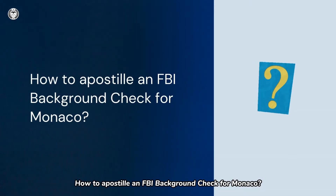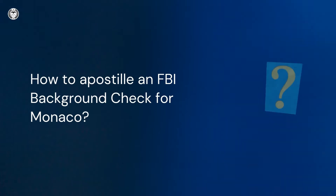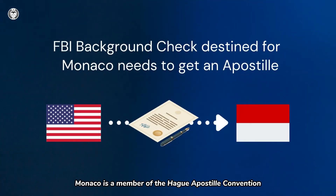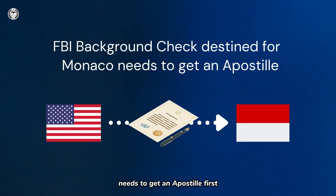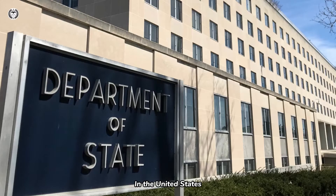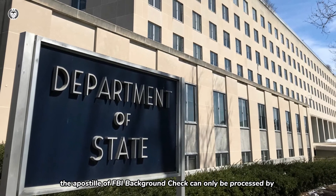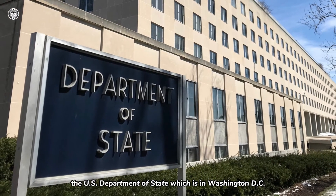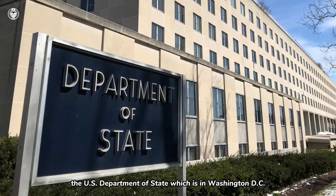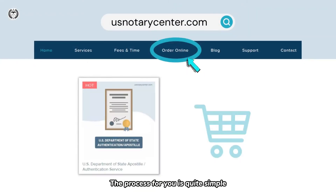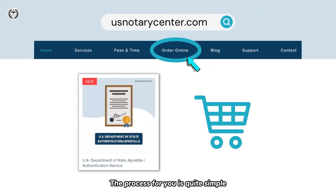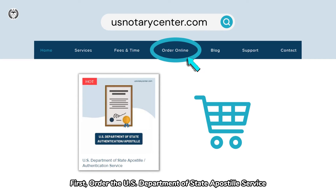How to Apostille an FBI Background Check for Monaco? Monaco is a member of the Hague Apostille Convention. An FBI Background Check destined for Monaco needs to get an Apostille first. In the United States, the Apostille of FBI Background Check can only be processed by the U.S. Department of State, which is in Washington, D.C. The process for you is quite simple. First, order the U.S. Department of State Apostille Service.